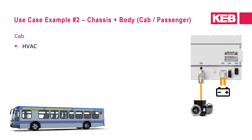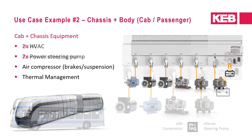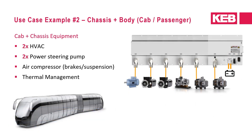Building up from the chassis, the next most typical applications include incorporating body equipment in the cab for passenger vehicles. These vehicles are typically buses and generally involve electrifying an air compressor for the HVAC system, and a four-in-one system could be utilized. For larger applications such as an articulated bus, which may have two power steering pumps and two HVAC units, a six-in-one inverter system can be used.